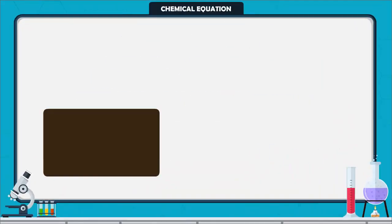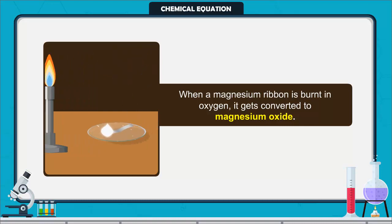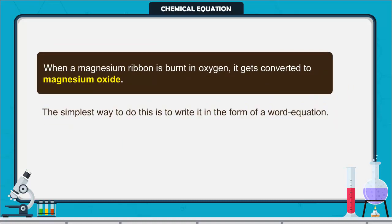Chemical equation. When a magnesium ribbon is burnt in oxygen, it gets converted to magnesium oxide. This description of a chemical reaction in sentence form is quite long. The simplest way to do this is to write it in the form of a word equation.